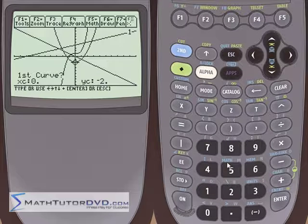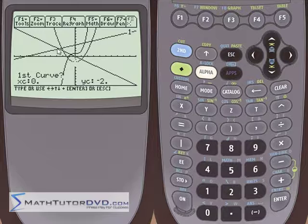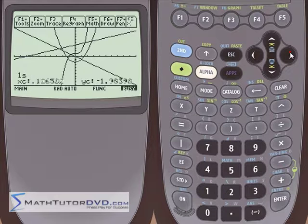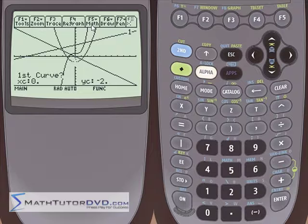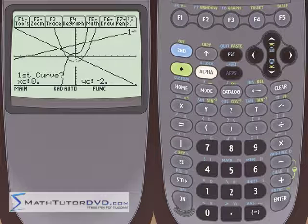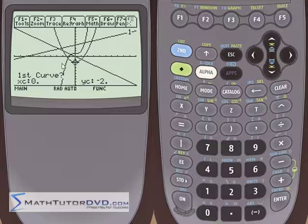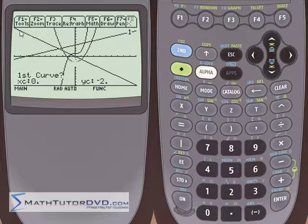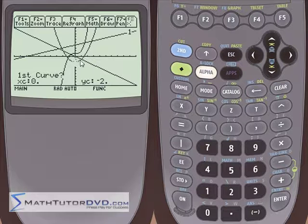So let's go to intersection. It says, what is the first curve? Well, let's say we're interested in finding the intersection point of these two lines. The first curve is not going to be this parabola here. So what we really need to do here is tell the calculator that the two graphs we're interested in is this line and this line. And the way we do that is by cycling through the graphs.